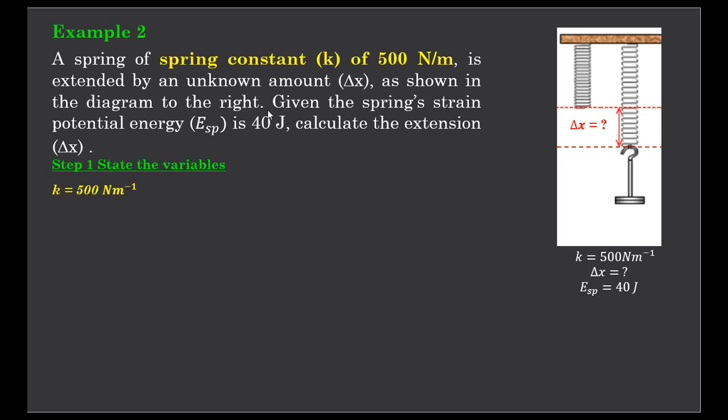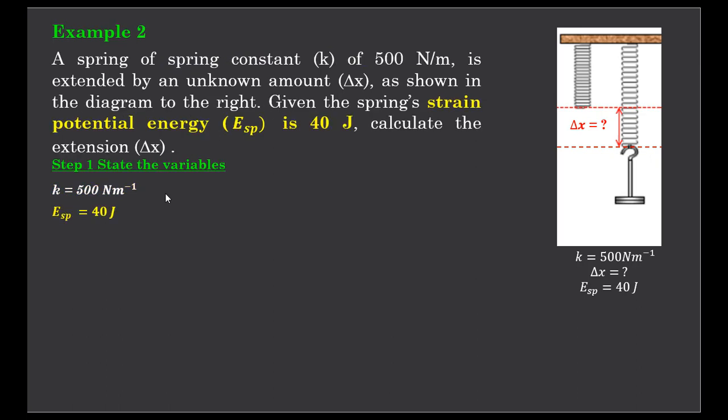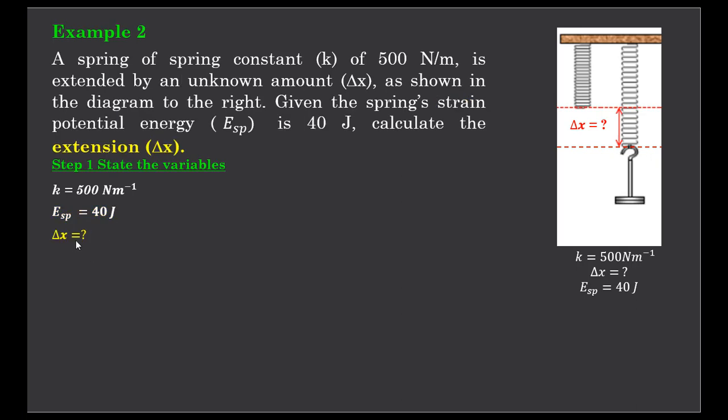So again, let's state the variables. Spring constant is 500 newtons per meter. The strain potential energy when this spring is stretched is 40 joules, and we want to know what is the extension delta x.